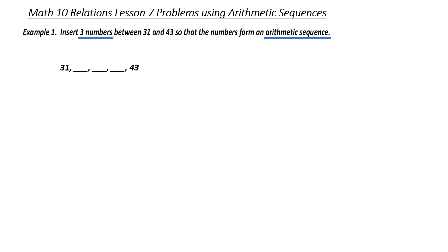If this is an arithmetic sequence, 31 would be considered my first term, or t₁. 43 would be the fifth term in the sequence, or t_n. I'm now going to take my inventory so I can use my formula for arithmetic sequences. t_n is 43, t₁ is 31, and n, the number of terms, is 5 because 43 is my fifth term.